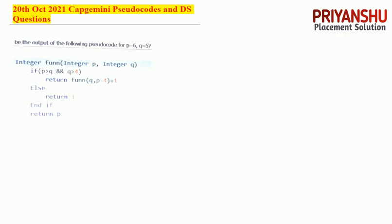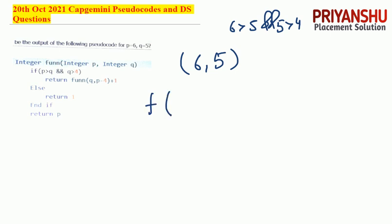The next question involves p and q in a recursion-based function. The value of p is 6 and q is 5. Checking conditions: p is greater than 3 — true; q is greater than 4 — true, because 5 is greater than 4 and p (6) is greater than 5. So the condition is true and the function returns recursively.